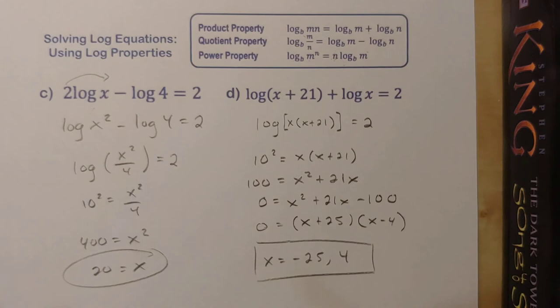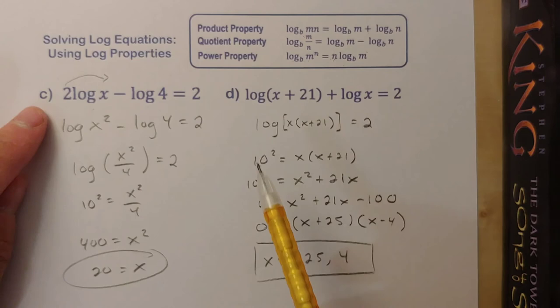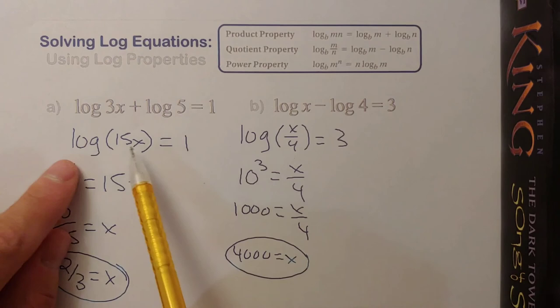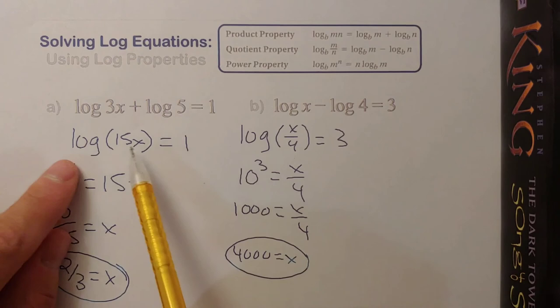So just a few different ways we can use logs to solve equations. We can use log properties to combine logs together before converting to exponential form. We did that with these examples using the product property and the quotient property. Once you get that log equation down to a single log, we're converting into exponential form in order to solve.